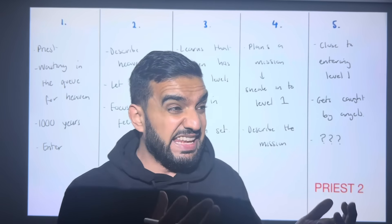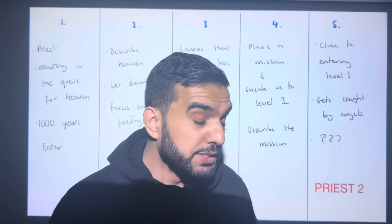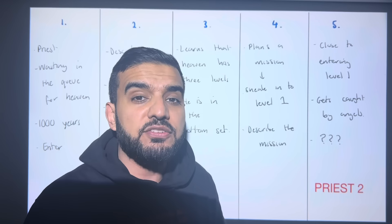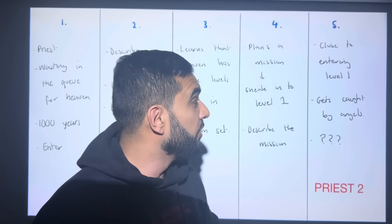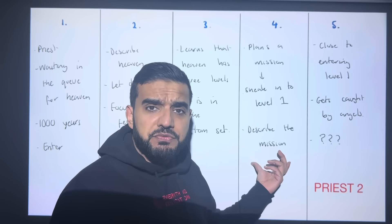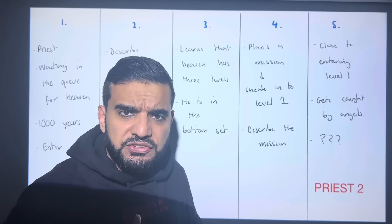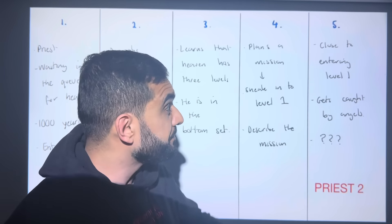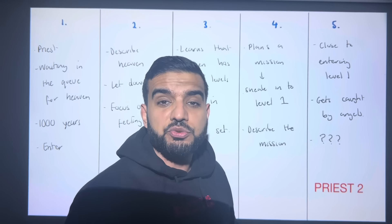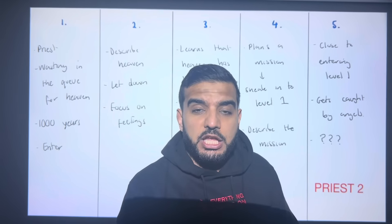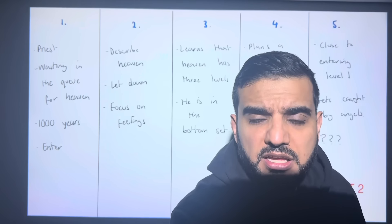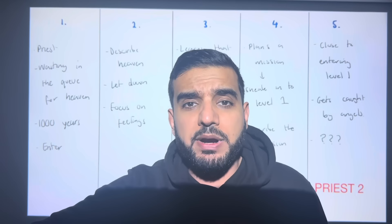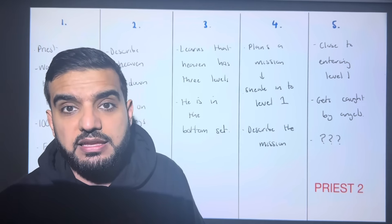In paragraph three, you learn that heaven has three levels and you've been put in the bottom level. You're angry and frustrated — all your life spent worshipping God and he's put you in the bottom set. In paragraph four, you plan a mission to sneak into level one — past a few guards, slide through the door. In paragraph five, you've gotten past all the angels and you're nearly there, but you feel a hand on your shoulder. You've been caught.